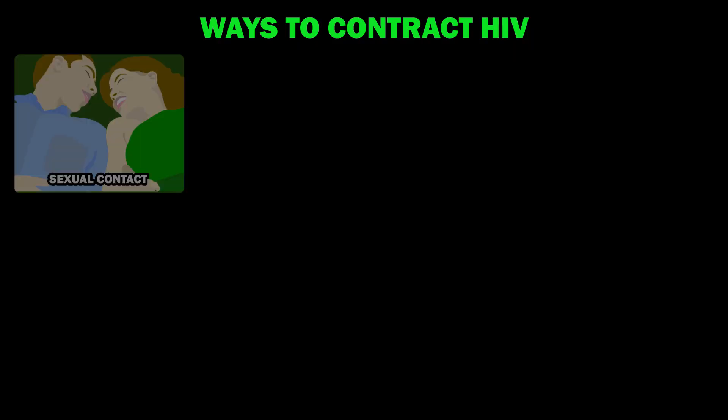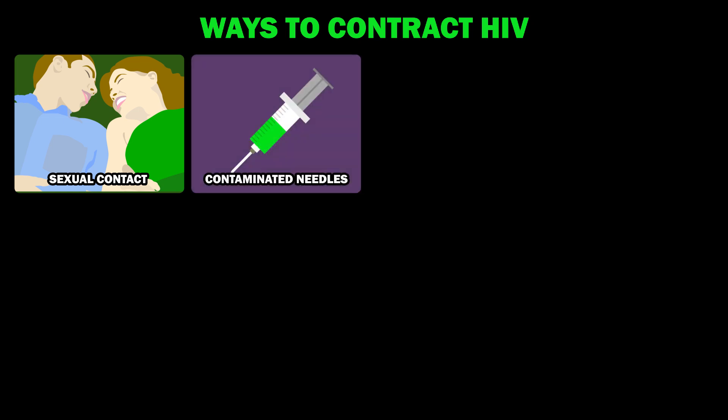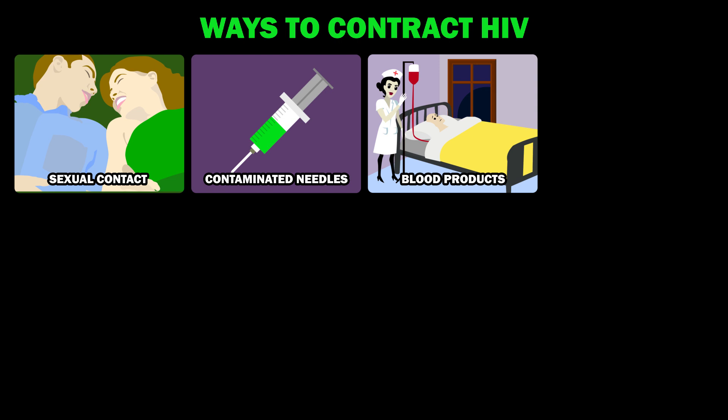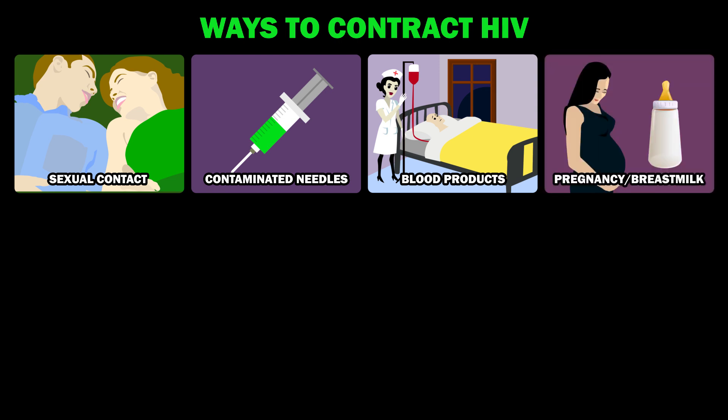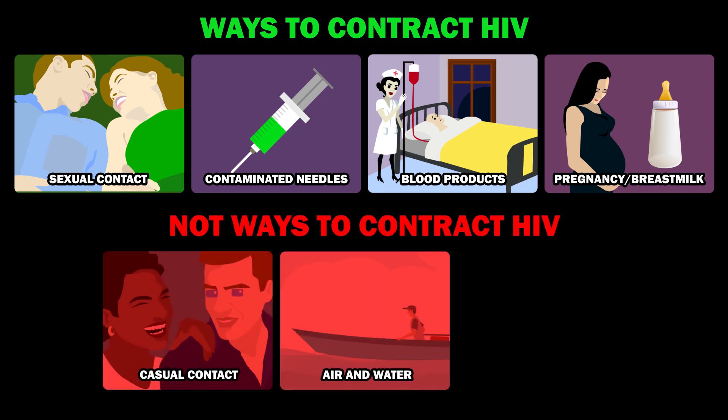Infection most commonly results from sexual contact, though it is also possible to contract HIV from contaminated needles or, in rare cases, from blood products such as blood transfusions. It is also possible for babies to get HIV from their mothers while in utero, or from breastfeeding. Fortunately, you can't get HIV from casual contact, the air, water, or mosquitoes.